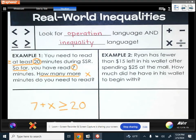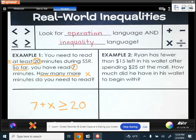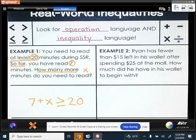So our inequality for this situation is 7 plus x is greater than or equal to 20. You could also write that as x plus 7 is greater than or equal to 20 because we can switch around the addition.